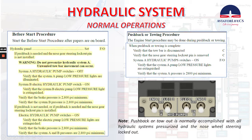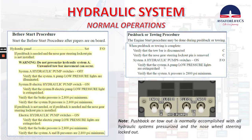If pushback is not needed, or if pushback is needed and the nose gear steering lockout pin is installed: electric hydraulic pump switches on — both of them. Verify that the electric pump low pressure lights are extinguished. Verify that brake pressure is 2800 psi minimum. Verify that system A and B pressures are 2800 psi minimum. When pushback or towing is complete, verify that the tow bar is disconnected, verify that the nose gear steering lockout pin is removed, system A hydraulic pump switch on, verify that system A pump low pressure lights are extinguished, and verify that system pressure is 2800 psi minimum.